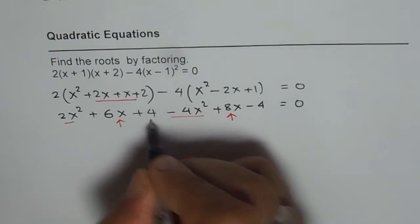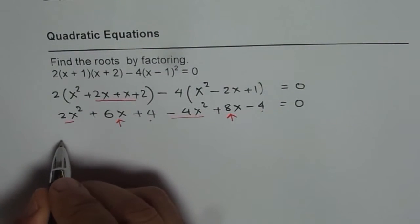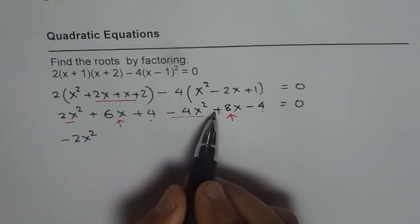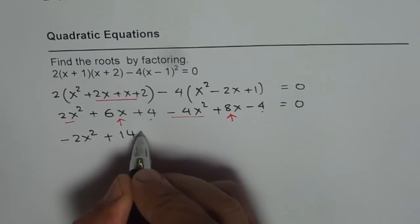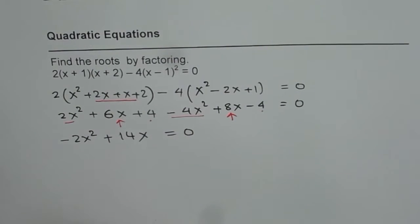And these constants. So we get 2x² - 4x² as -2x², and 6x + 8x will give us +14x, and 4 - 4 is 0.